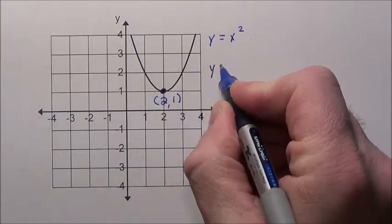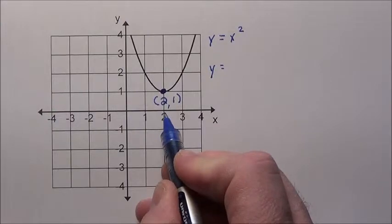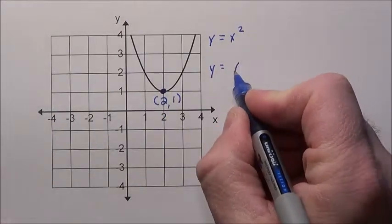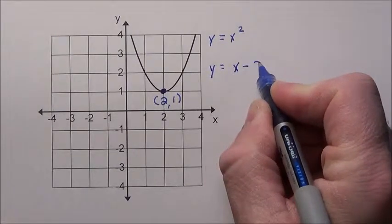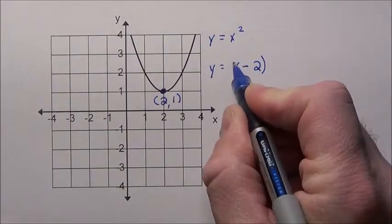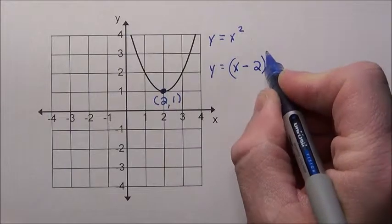So here's what we did. We slid it to the right 2. That means we messed with the x value. And what we did, remember, if it came over to positive 2, that means we did the opposite. We subtracted 2 from it. So you had x subtract 2 squared.